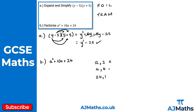We've found the correct pair, so now we factorize into double brackets. Working with variable a, we get an a at the front of both brackets. Putting the numbers in: a plus 4 and a plus 6. That's the solution to part b and question two.